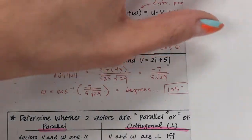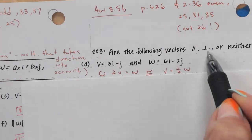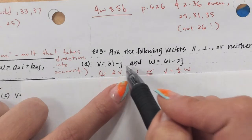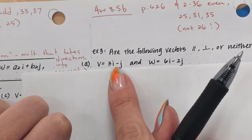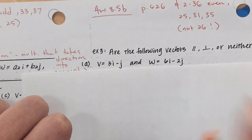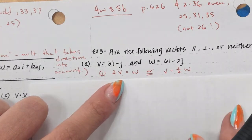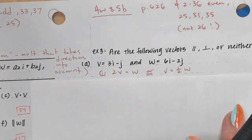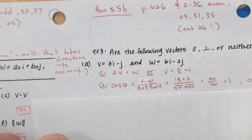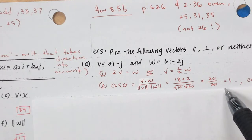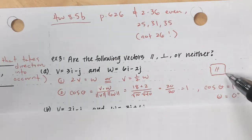Let's try example 3: are the following parallel, perpendicular, or neither? Looking at this, I can tell right away that this is twice as much as that — it's a 6, a 3, a 2, a 1. If you double V you get W, so I can write it either way. I think this should be parallel, but I'll check by finding the angle. Using the formula you plug in and get 1 — cosine inverse of 1 is zero degrees. So those are parallel — that's my final answer.